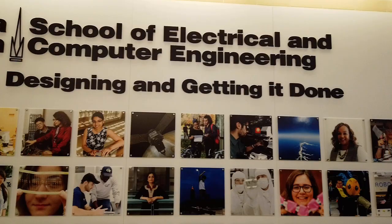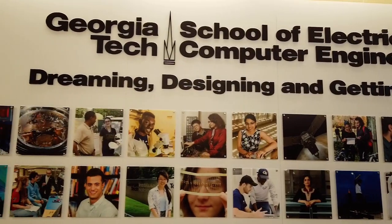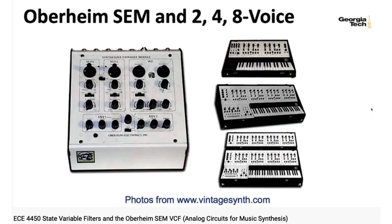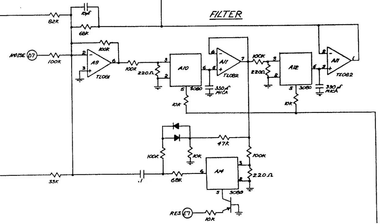Hi there. My name is Aaron Lancherman. I'm a professor of electrical and computer engineering at Georgia Tech. In the last lecture, we introduced the concept of state variable filters, and we looked at implementations in the Oberheim SEM and the Oberheim OBX. The circuits in the OBX are pretty similar to the circuits in the SEM. The main difference is that while the SEM uses just a potentiometer to control the resonance, the OBX uses a voltage-controlled amplifier in the feedback loop, as would be necessary for a polyphonic synthesizer with digital patch storage.